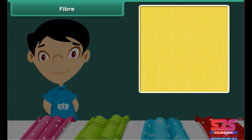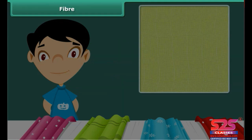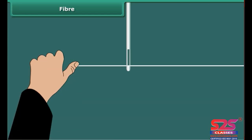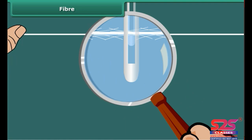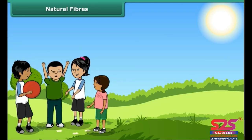Have you ever had a closer look at a fabric? If yes, you must have seen many yarns in it. These thin yarns are made up of still thinner strands. To understand this, take a piece of fabric and take out a yarn from it. Press one end of the yarn along its length with a needle — you can see that the yarn splits into thin strands. These thin strands are called fibers.